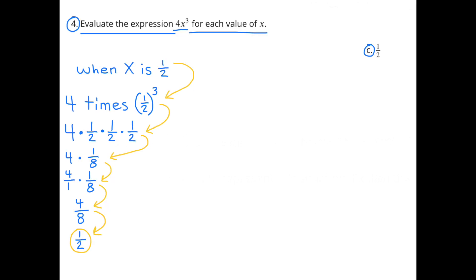C. When the value of x is equal to 1/2, you're going to substitute the x with 1/2. So 4 times x³ would be 4 times (1/2)³. And 4 times (1/2)³ is the same as 4 times 1/2 times 1/2 times 1/2. And 1/2 times 1/2 times 1/2 equals 1/8. So 4 times 1/8 would be 4/8, and 4/8 equals 1/2. So when x equals 1/2, 4x³ equals 1/2.